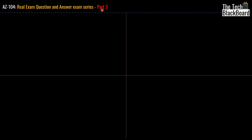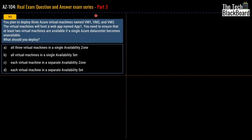Let's begin part 3 with question number 11. You plan to deploy 3 Azure virtual machines — VM1, VM2, and VM3 — to host a web app named App1. You need to ensure that at least 2 virtual machines are available if a single Azure data center becomes unavailable. Options are: all 3 VMs in a single availability zone, all VMs in a single availability set, each VM in a separate availability zone, or each VM in a separate availability set.